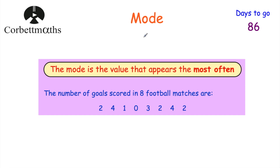Today we're going to be looking at the mode, the median, the mean and the range — the averages and the range. We're going to start by looking at the mode. The mode is the value that appears the most often. For instance, here we've got the number of goals scored in eight football matches: 2, 4, 1, 0, 3, 2, 4 and 2. If we're asked to find the mode, we look at the values and see which one appears the most often. We've got three 2's — 2 appears more often than any other number.